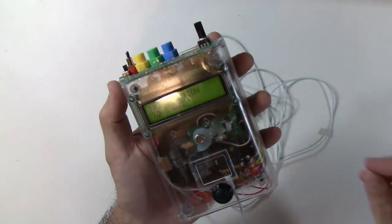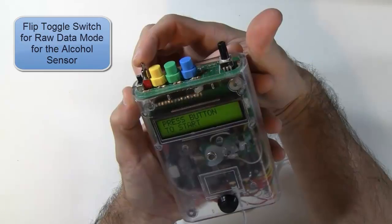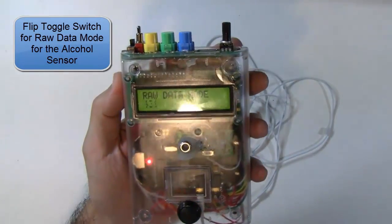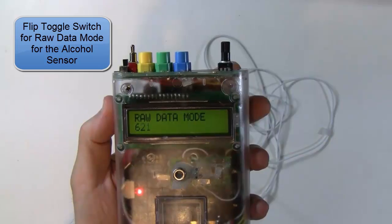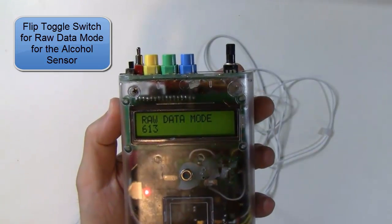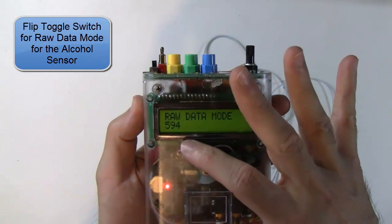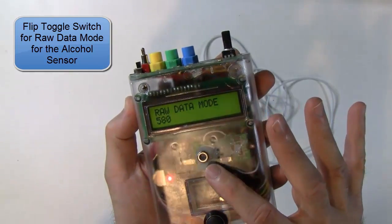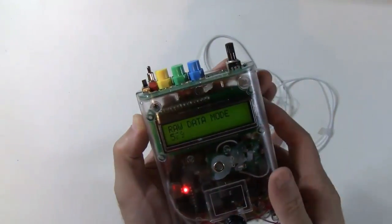So just some other features here. You'll notice there's a toggle switch right here. If I go ahead and flip that, it basically puts it into raw data mode. What that means simply is it's just showing you the raw data that's being output from our alcohol sensor. And that's the actual value.